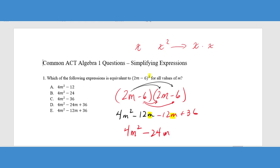Negative 24M and then a positive 36. I've combined together all the terms that are the same. So 4M squared minus 24M plus 36. We can look at our answer choices and see that that is answer choice D. Now you want to keep in mind here, and this is one of the things when I taught algebra that was a very big problem that I saw a lot of students have.